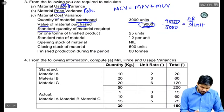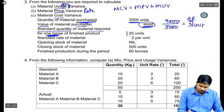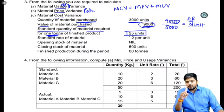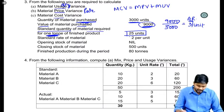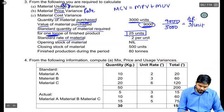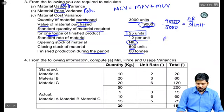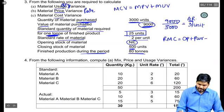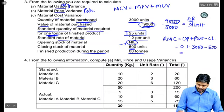Standard quantity of material required for one ton of finished goods is 25 units. To make one ton of output, 25 units of raw material are needed. Standard rate of material is rupees 2 per unit. Opening stock is zero, closing stock of material is 500. Finished product during the period is 80 tons. Raw material consumed equals opening plus purchases minus closing: 0 + 3000 − 500 = 2500 units. So my raw material consumed is 2500 units for 80 tons of output.